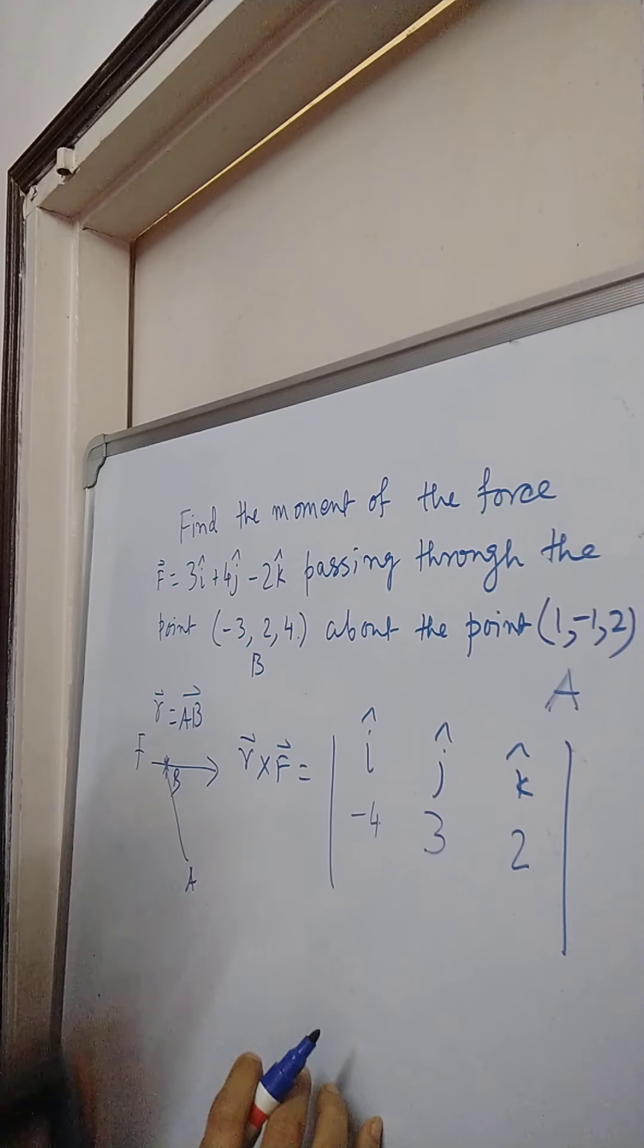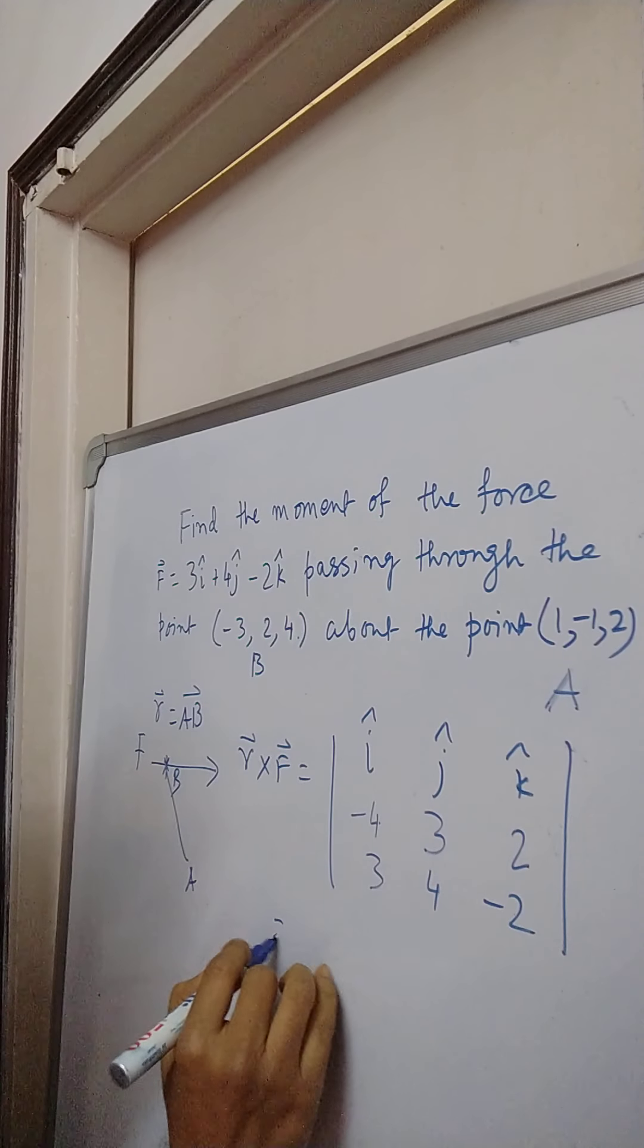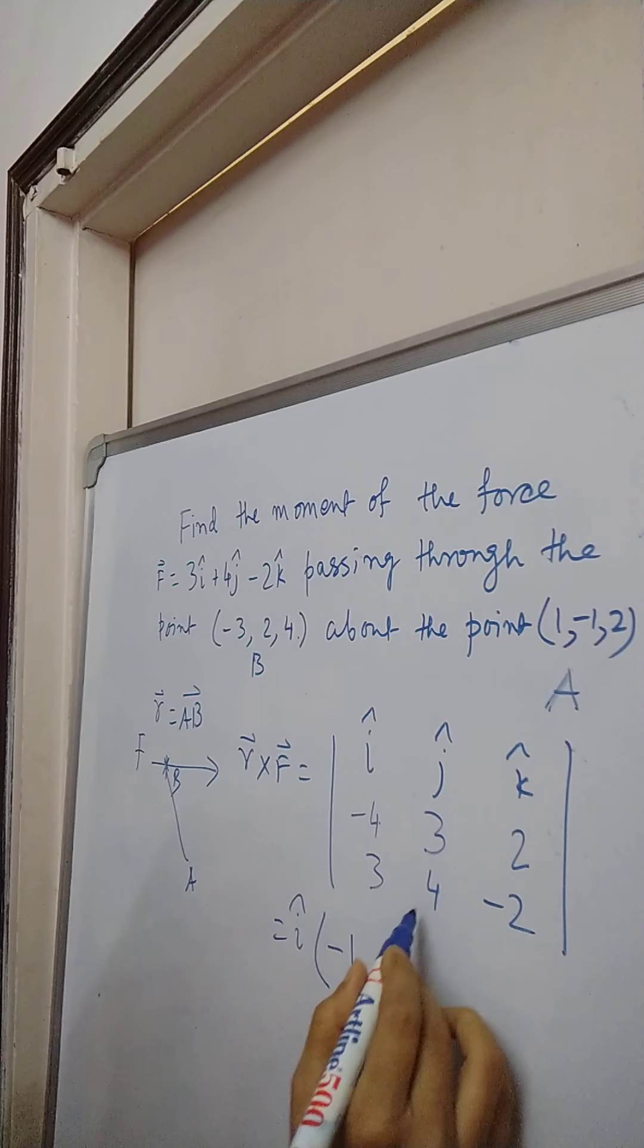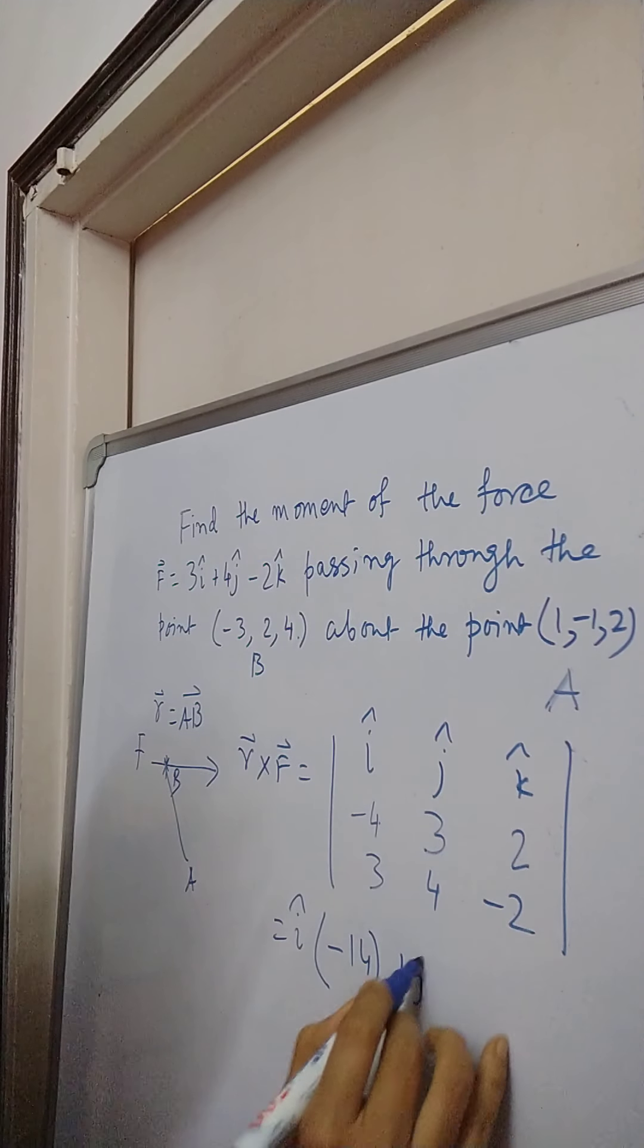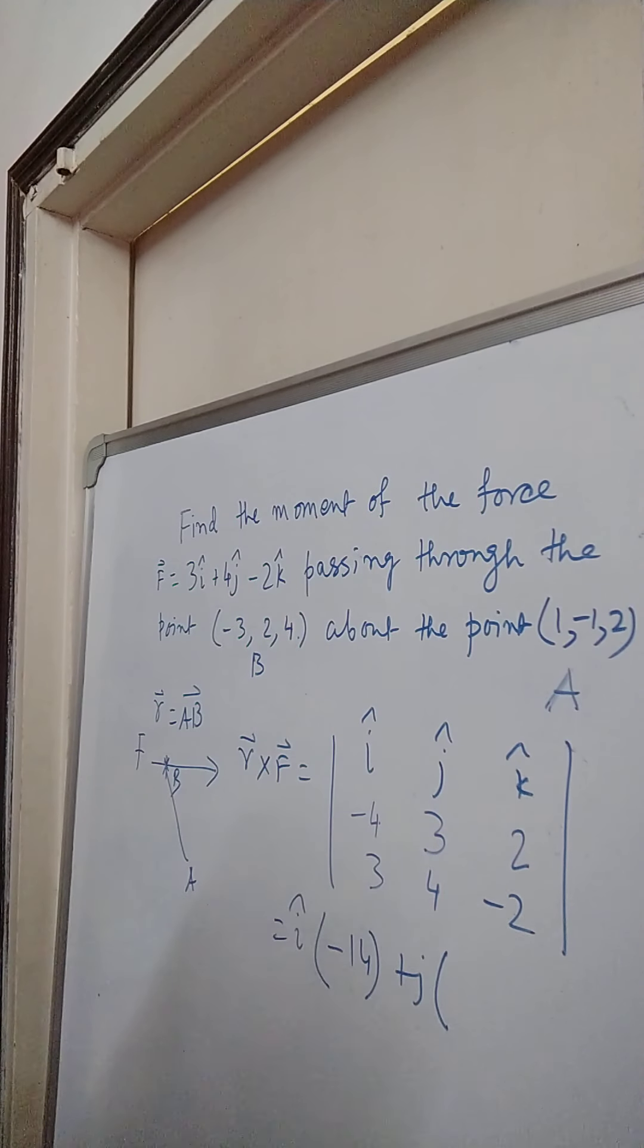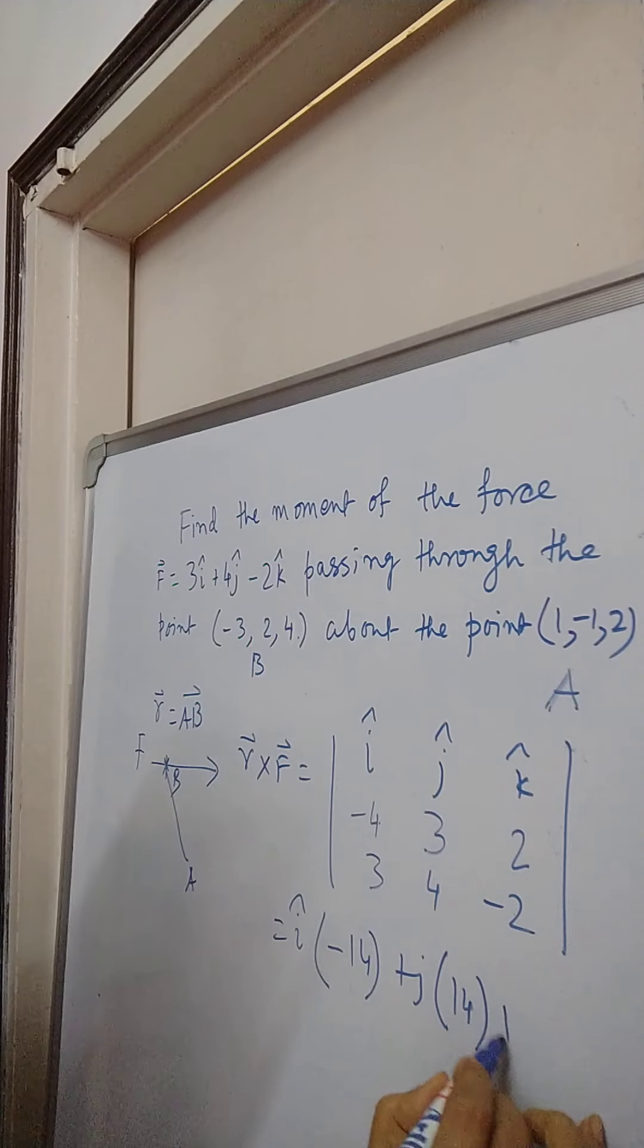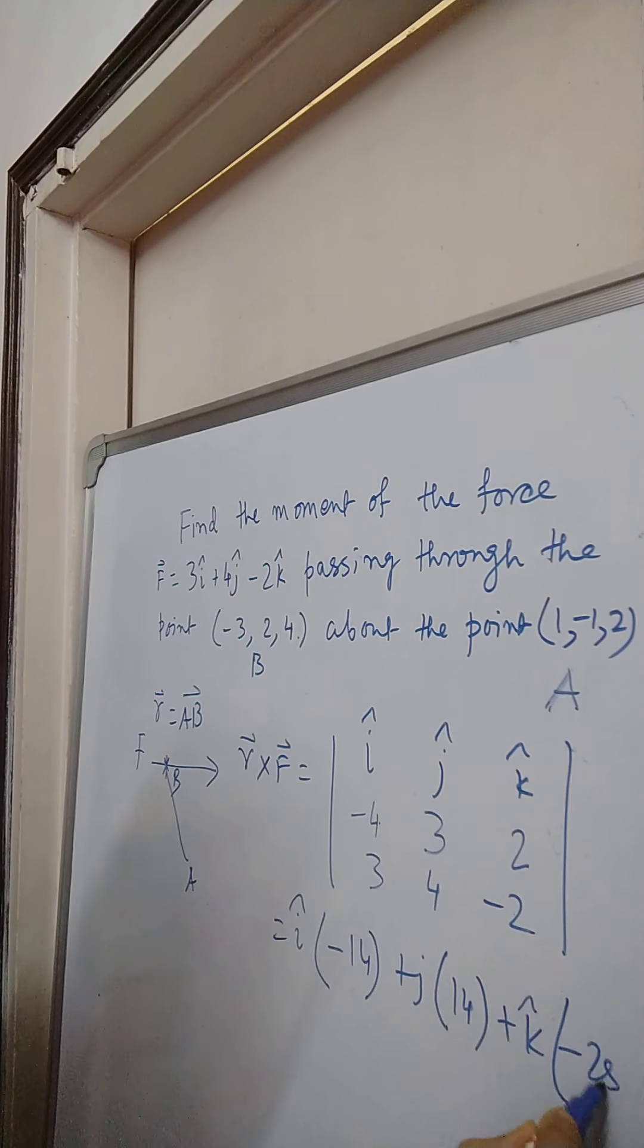I have earlier calculated it and what is F? F is nothing but 3, 4 and minus 2. So it comes out to be i cap into minus 14 and then j cap into plus 14, 6 plus 8 is 14, and then k component turns out to be minus 25.